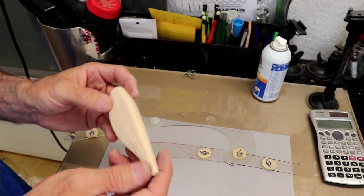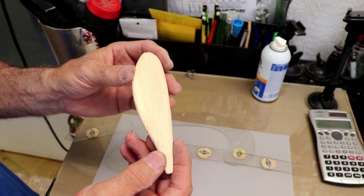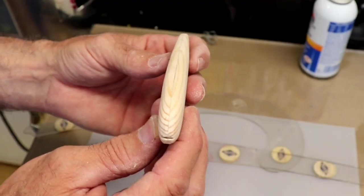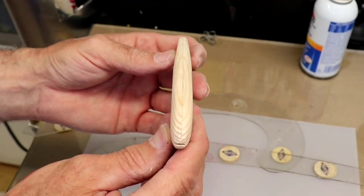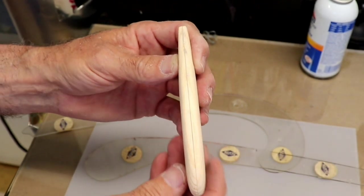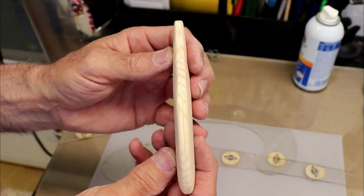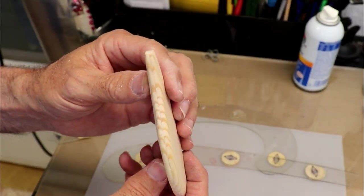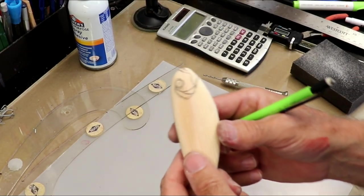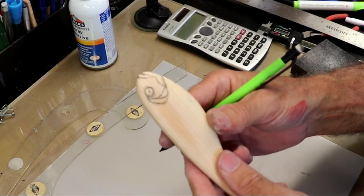After a little sanding it's looking pretty nice. It's smooth and there's some pretty nice symmetry right down the middle on top, as well as on the bottom. Now it's time to put in the carving details.